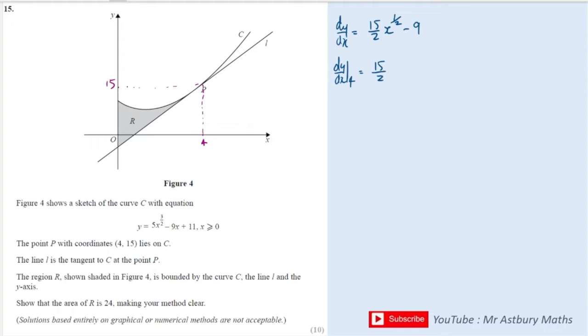So I'm going to sub 4 into my derivative and that will give me 4 to the power of a half is 2, cancels with the divide by 2, so 15 minus 9 is 6. Okay great, so the gradient of the curve at the point P is 6, which means that the gradient of the line is 6.